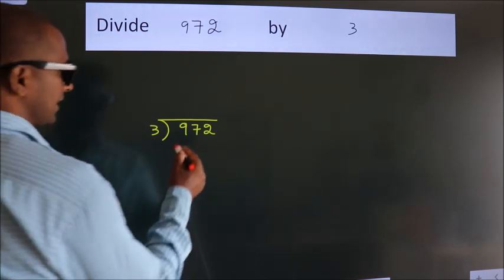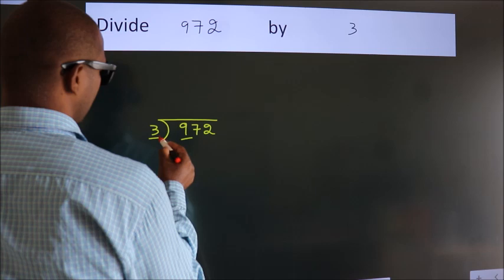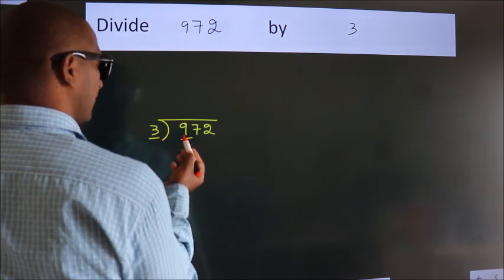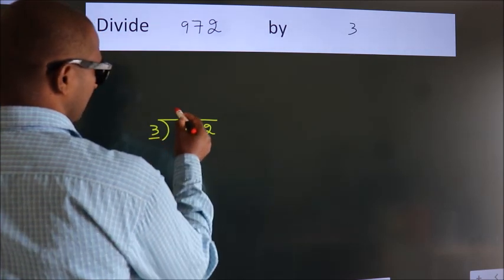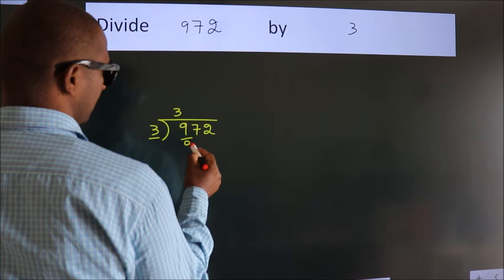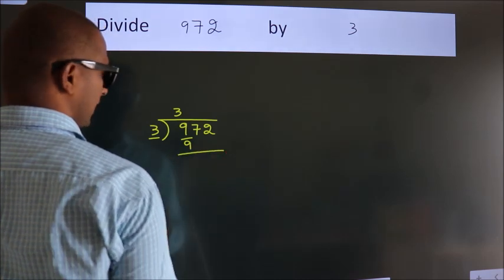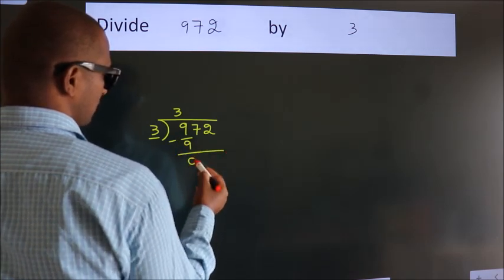This is your step 1. Next, here we have 9, here 3. When do we get 9 in the 3 table? 3 times 3 is 9. Now we should subtract. We get 0.